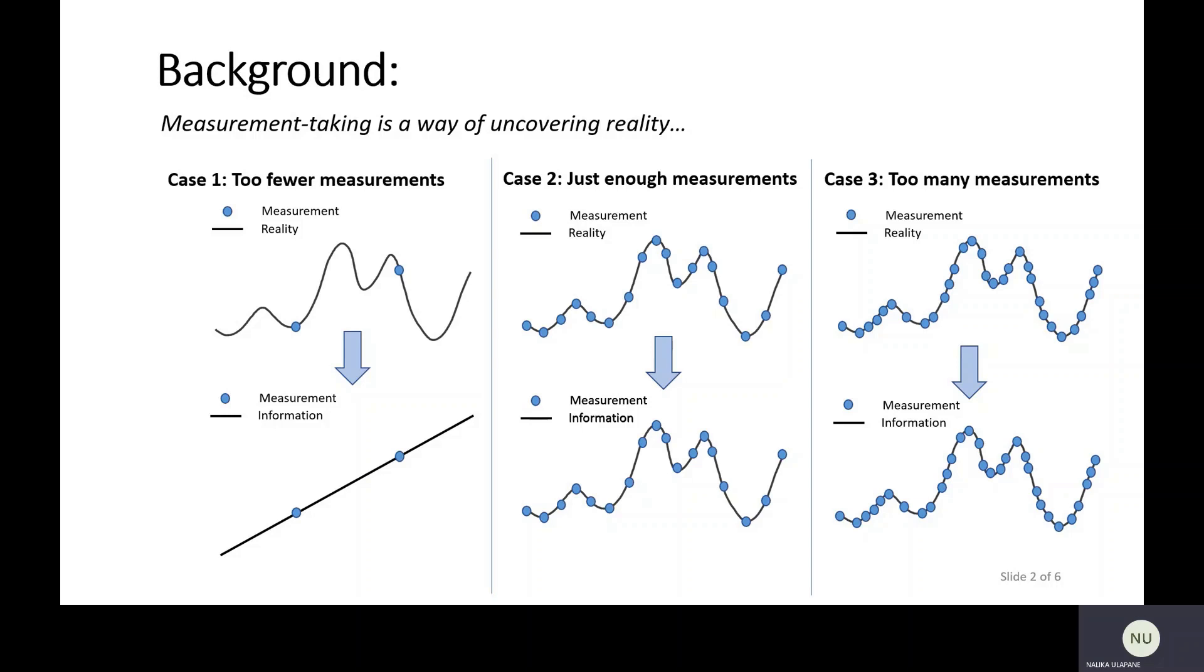The first case is you can uncover reality through too few measurements. When you take too few measurements, what happens is you will uncover some information, but your information will be obviously mismatching to reality. So that's not going to be good for you. Case two is you take just enough measurements. When you take just enough measurements, you will be able to uncover reality just about right, which is good enough for you.